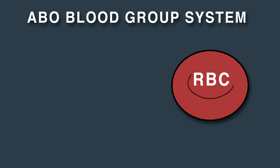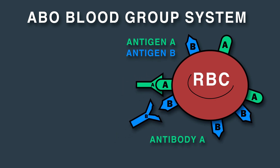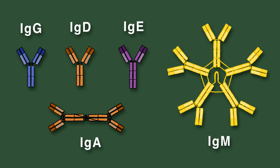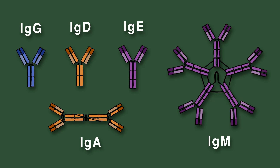The ABO blood group system involves two antigens and two antibodies found in human blood: antigen A and antigen B, and antibody A and antibody B. The A and B antigens are found on red blood cells, while antibodies A and B are in the serum. The antibodies are usually IgM, or immunoglobulin M, antibodies.